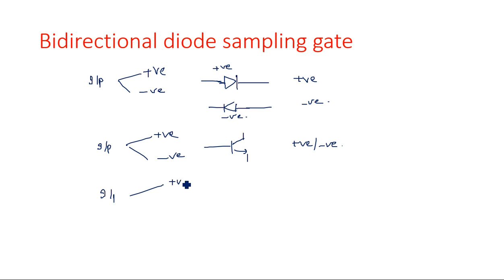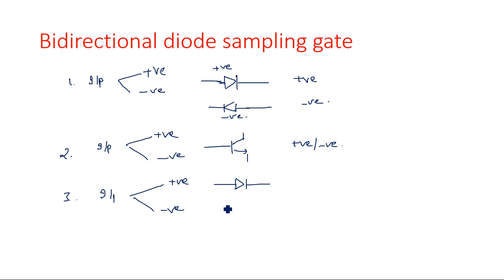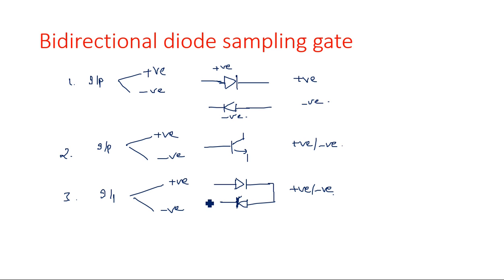The same bidirectional behavior can now be implemented with diodes. This time we are going to use two diodes to transmit both positive and negative polarities - not just one diode. These two diodes are connected together to the input supply so that both positive and negative signals can be transmitted to the output. That is the main idea of this bidirectional sampling gate using diodes.